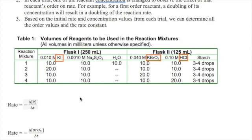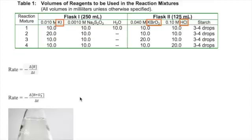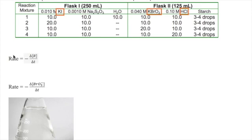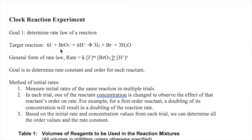Now clearly another important component of the method of initial rates is a way to measure initial rate in each trial. Let's discuss how to do this. First, remember that rate is defined as the negative of the change in reactant concentration divided by the change in time.